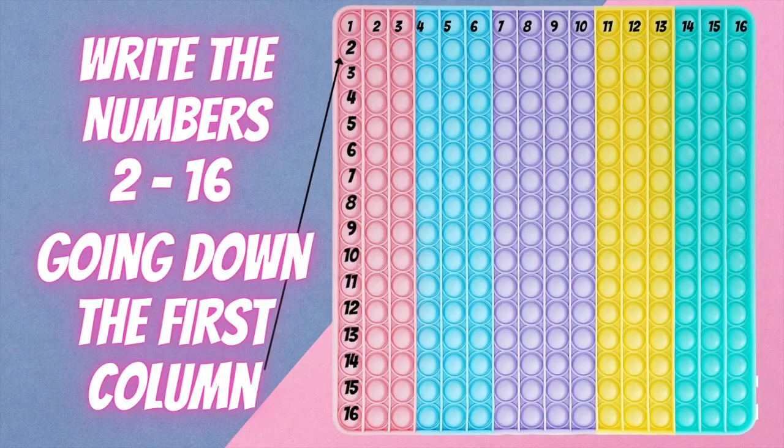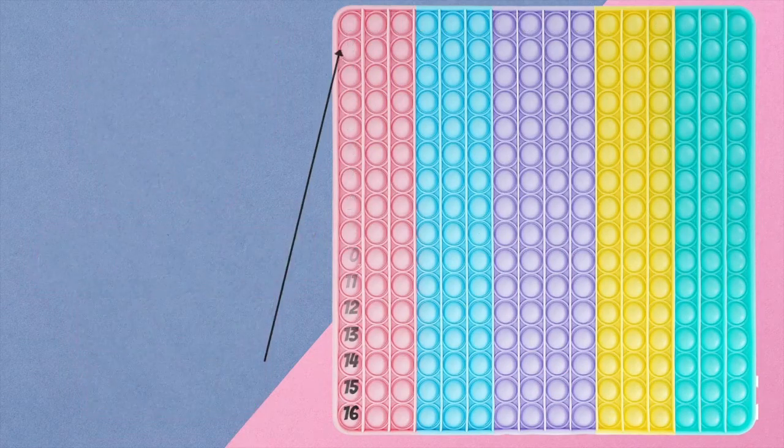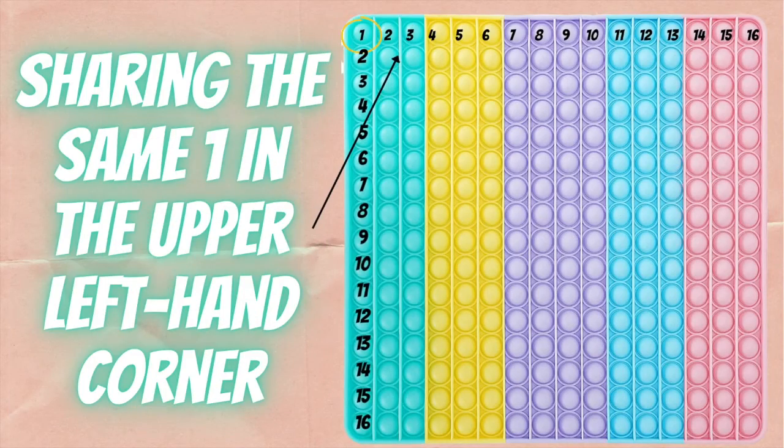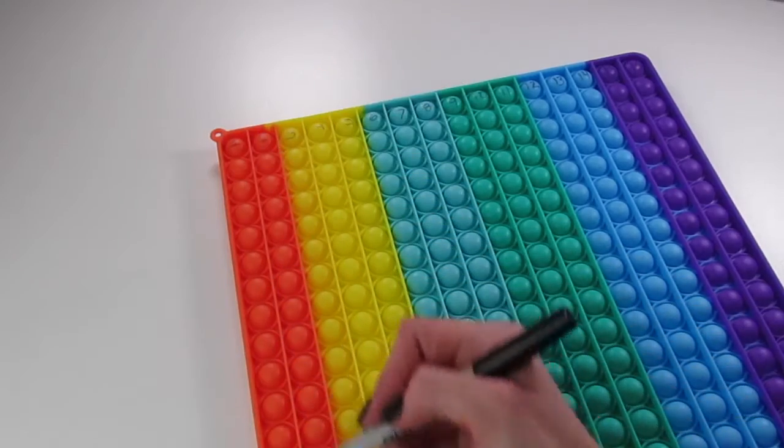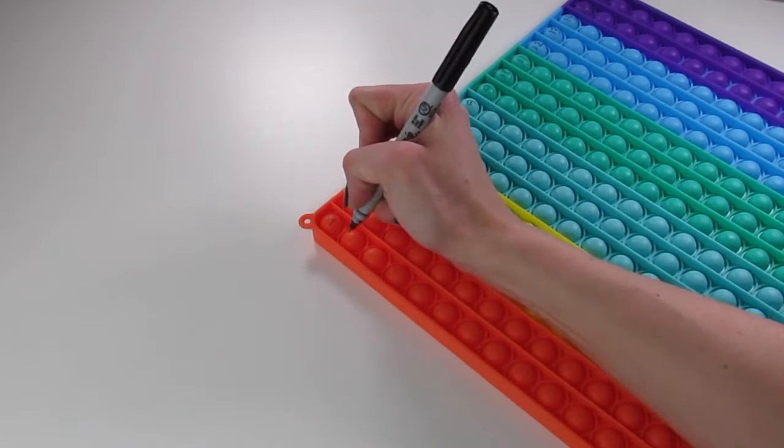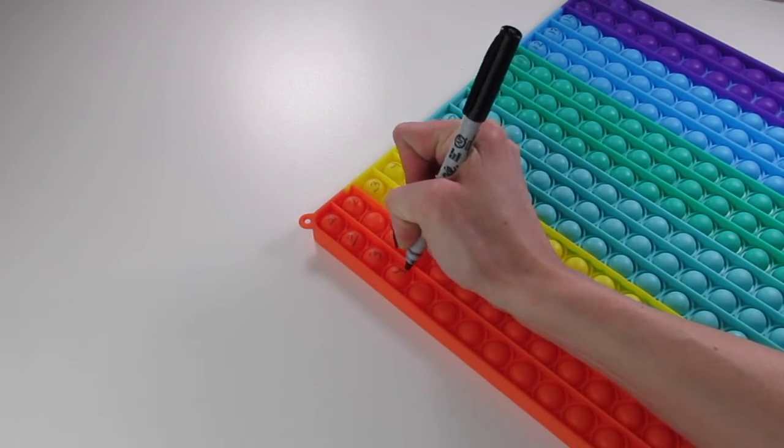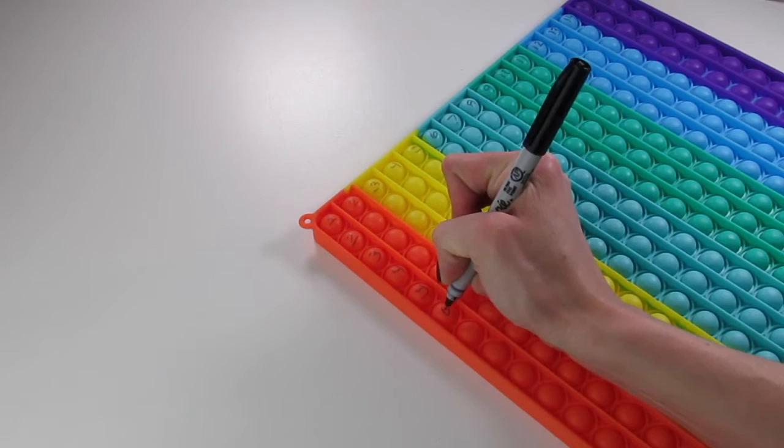So now we're going to write 2 through 16 in the first column of the pop-it. They're going to be sharing the 1 in the upper left-hand corner, and this is going to give us the setup for our multiplication chart.